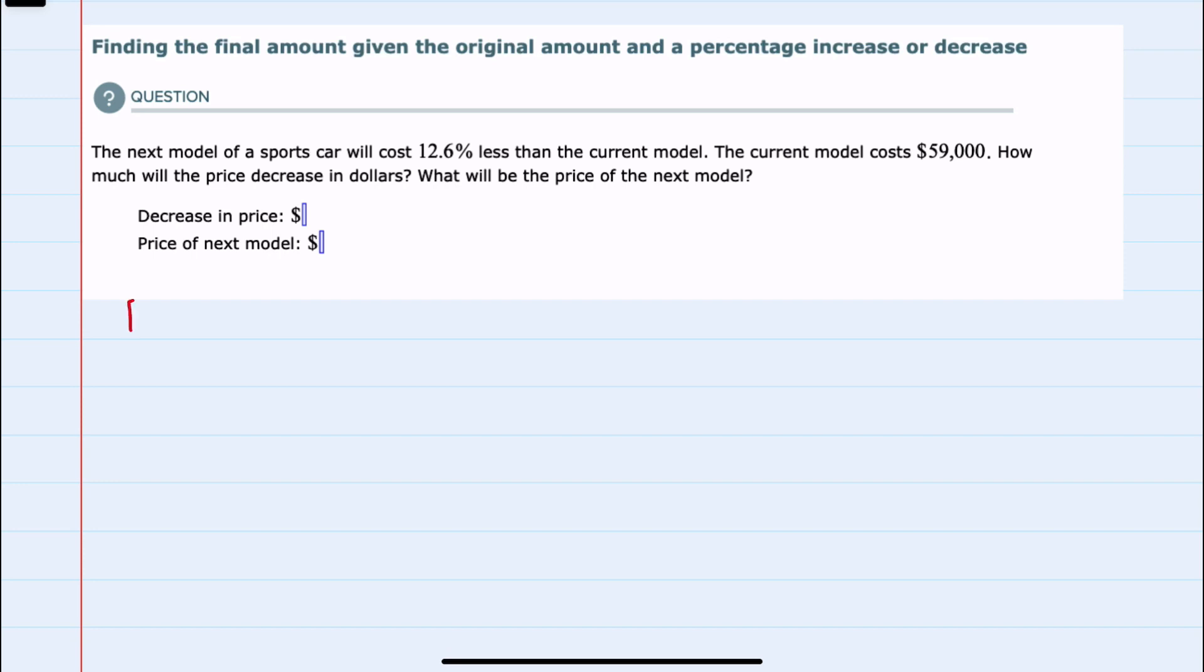So I'll start with the decrease. To calculate the decrease, we would have to know the original price, here $59,000, and the percentage of the decrease, which is 12.6%. And to find the amount of the decrease,